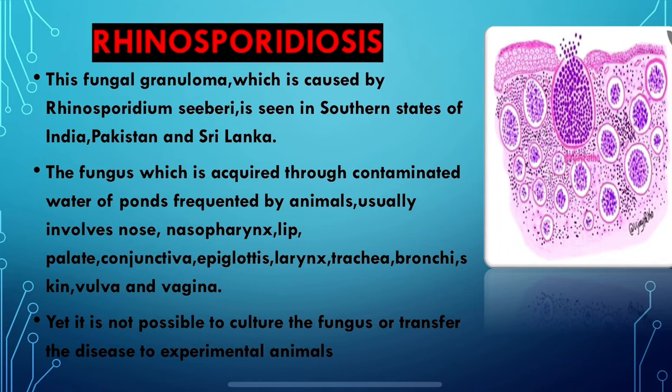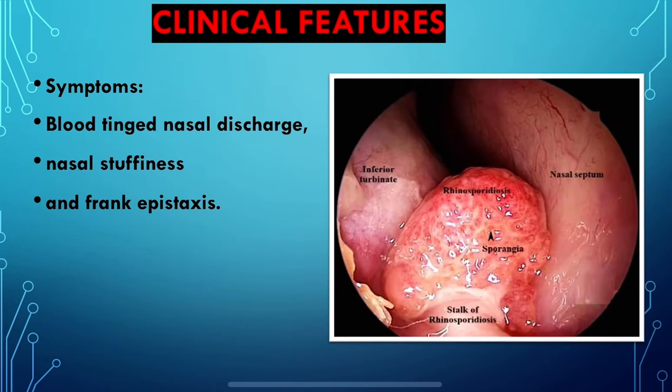Now let us look at the clinical features. A patient suffering from rhinosporidiosis will present with blood-tinged nasal discharge, nasal stuffiness — which is like an obstruction in the nose — and frank epistaxis.